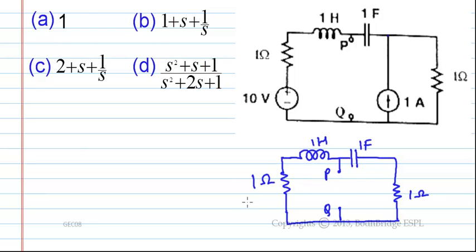Redrawing again this circuit to isolate the P and Q terminals, we have the resistance and inductance in series with parallel combination of a resistance and a capacitance in series.